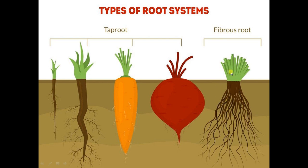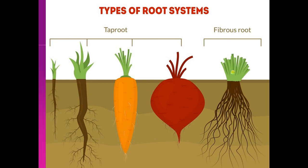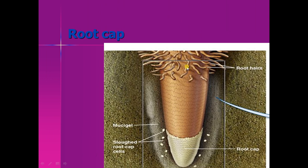Another kind of root is the fibrous root. In fibrous roots, there are many small roots of the same size arising from the plant. Such roots are present in wheat and grasses. There is also a protective covering on the tip of the root called the root cap, which protects the sensitive growing points of the root.